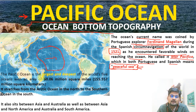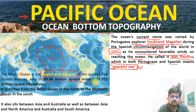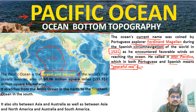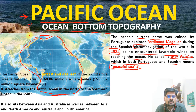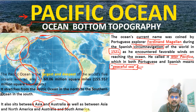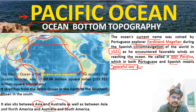Looking into the configuration and size, the Pacific Ocean is the largest and deepest of the world's oceans. It is about 60.06 million square miles or about 155.557 million square kilometers in aerial coverage. It stretches from the Arctic Ocean in the north to the Southern Ocean in the south, and sits between Asia, Australia, North America, and South America, with Antarctica to the south.